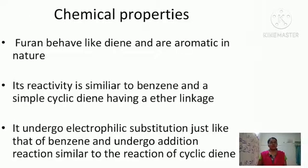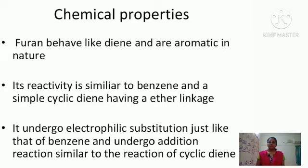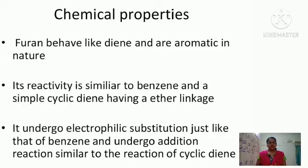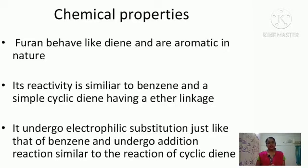Coming to the chemical properties of furan: the ring contains two double bonds alternate to each other, meaning they are conjugated. Whatever reactions are carried out by a conjugated diene, furan also has a tendency to undergo. A diene typically undergoes addition reactions, so furan also has a tendency to give addition reactions just like a diene.